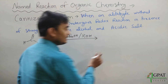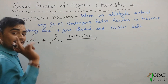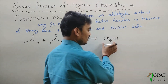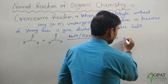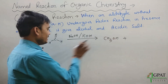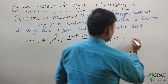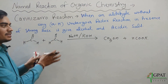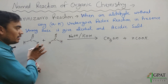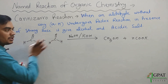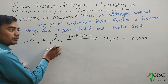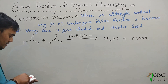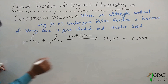The reaction produces an alcohol — since formaldehyde is a single carbon compound, it forms methanol — while the second molecule gets oxidized and forms an acid (acidic salt, HCOO⁻). So the first molecule gets reduced and forms the alcohol, while the second molecule gets oxidized and forms an acid.